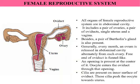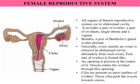Generally, every month an ovum is released in the abdominal cavity alternately from each ovary. The free end of the oviduct is funnel-like, with an opening at the center through which the oocyte enters the oviduct. From the ovary, one ovum or oocyte is released only when puberty is reached — puberty is the age when the oocytes get matured and are ready to be released.